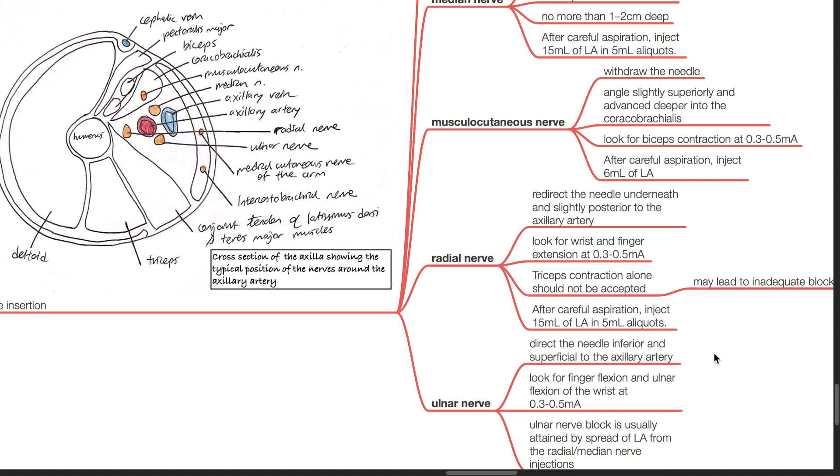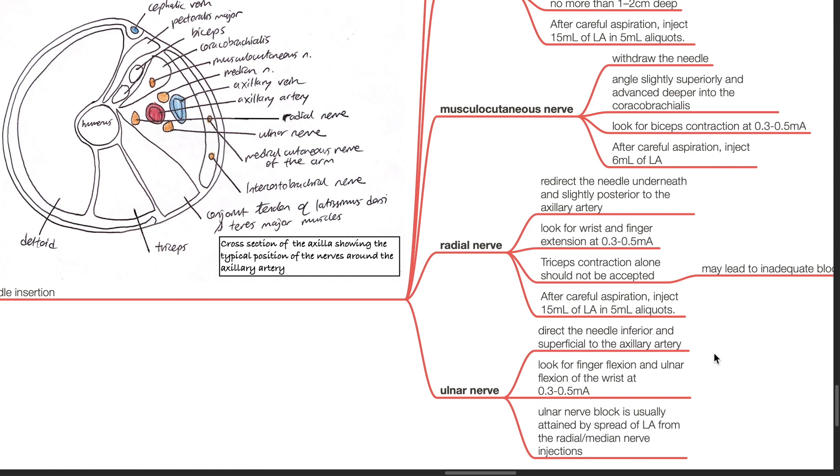To block the ulnar nerve, direct the needle inferior and superficial to the axillary artery. Look for finger flexion and ulnar flexion of the wrist at 0.3 to 0.5 milliamps. Ulnar nerve block is usually attained by spread of local anesthetic from the radial or median nerve injections, and there may not be a need to block the ulnar nerve separately.